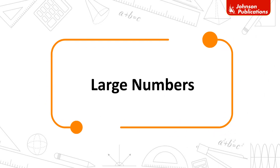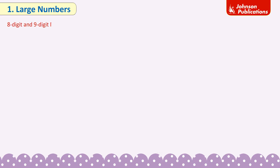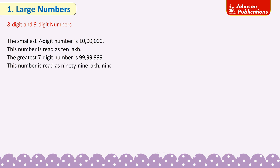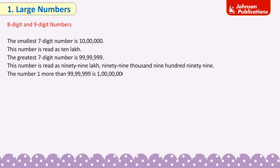Large numbers: 8-digit and 9-digit numbers. The smallest 7-digit number is 10 lakh, and the greatest 7-digit number is 99,99,999. The number 1 more than 99,99,999 is 1 crore. This is the smallest 8-digit number and is read as 1 crore.